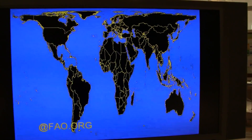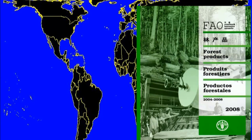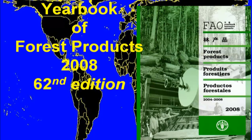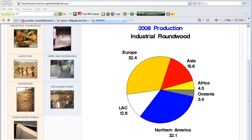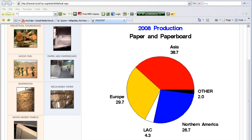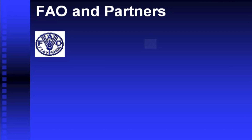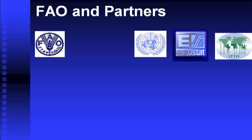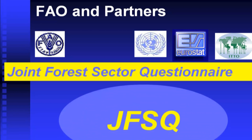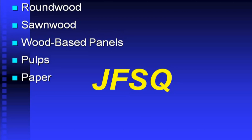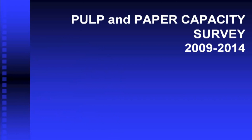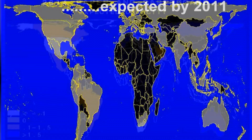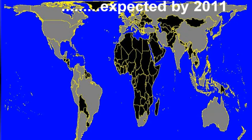Obviously our contribution depends on who uses it. We normally use the Joint Forest Sector Questionnaire, which is a joint activity among our partners between UNECE, Eurostat, and ITTO. Through this effort we try to streamline the complete process in a way that the information is collected just once, and through different steps we try to get the best quality of our data — and this is how we operate.